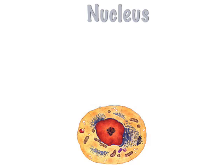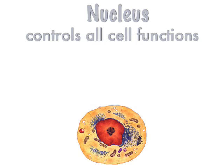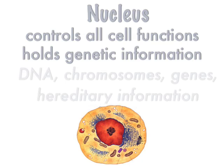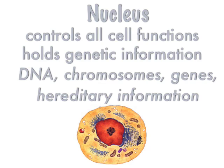The nucleus controls all cell functions, but that's not usually tested. What they usually ask is what's in there. The nucleus's job is to hold DNA — genetic information. You'll see it written several ways on the Regents: where DNA is located, location of the chromosomes, genes or genetic information, or hereditary information.